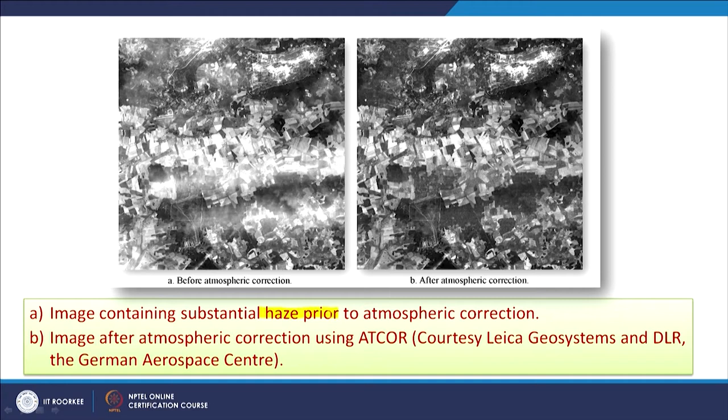Haze is another problem in northern India because of pollution and dust particles. By looking at previews from suppliers and rainfall data, you can know when rain has occurred, and just after that if you get an image you may not see much haze. So just after rain, when clouds are less, the image is very clear and atmospheric distortions are minimum — that is the time to acquire, take, buy, or download the image of that particular time.